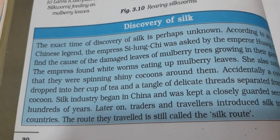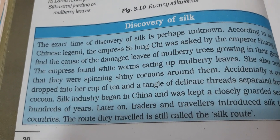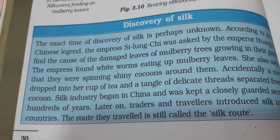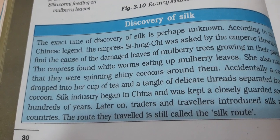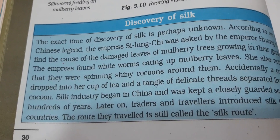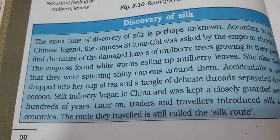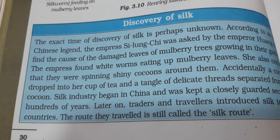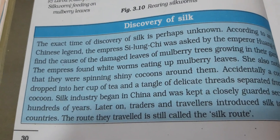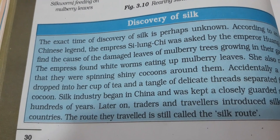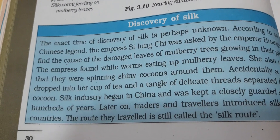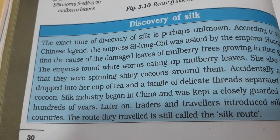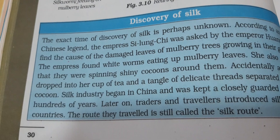There is a story: the empress of the emperor Huangti went to the garden where there were many mulberry trees. She found that white worms were eating the mulberry leaves, and accidentally a cocoon fell into her cup of tea, and a tangle of delicate threads began to separate from the cocoon. This is how silk was discovered. For thousands of years, the Chinese kept the production of silk a secret. They began trading silk along the Silk Route in the 13th century.